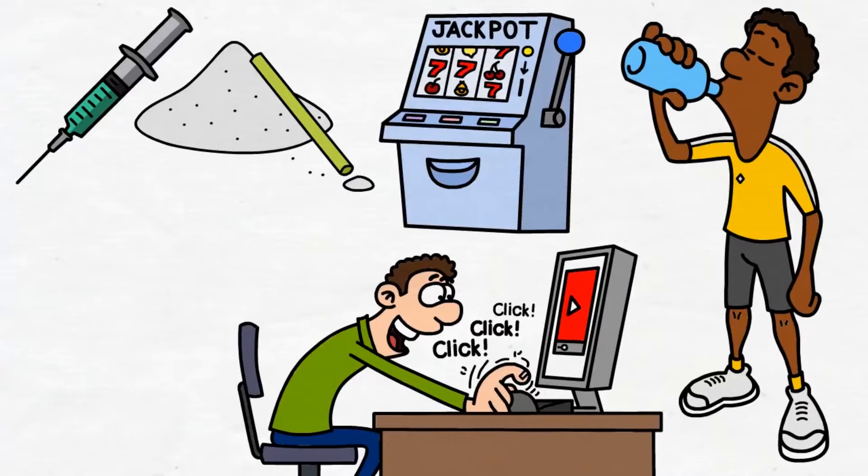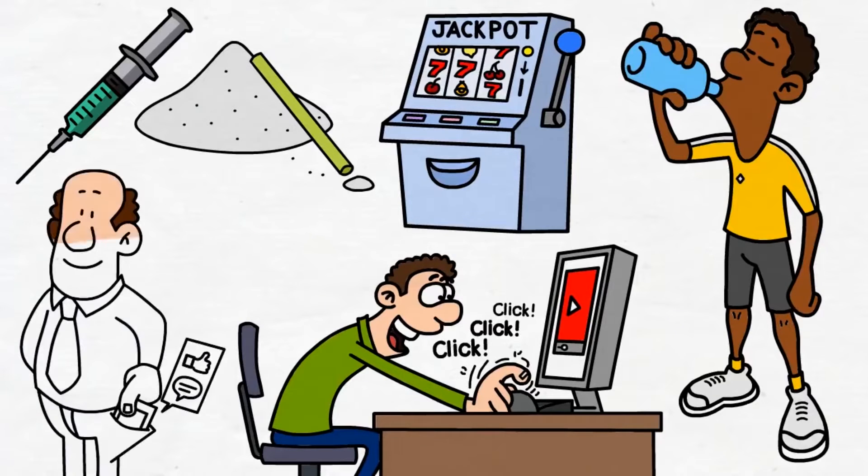We anticipate some sort of reward with each one of those behaviors. That's why we're constantly checking our phones. We expect to see a text message or some other notification, and we know that eventually we're going to receive it. We're becoming like those rats pulling the lever, trying to get a new dopamine hit.